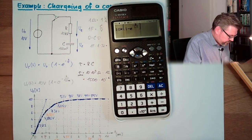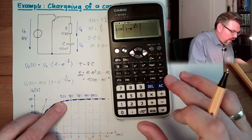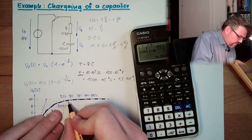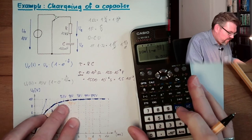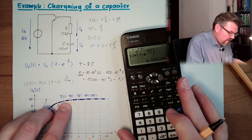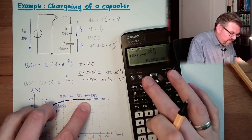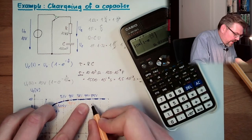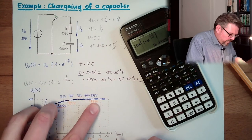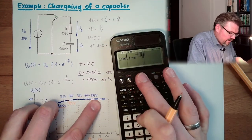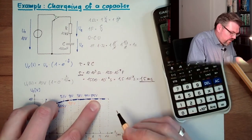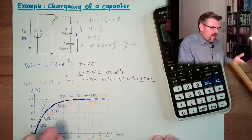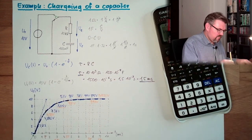After 3 tau at 4.5 milliseconds, we are at 9.5 volts — exactly 95%. After 4 tau, 98%. After 5 tau at 7.5 milliseconds, it's 99.3%, so 9.93 volts. After 6 tau, 99.75%, so 9.975 volts. After 5 tau we can say it's done — nothing more will happen here.